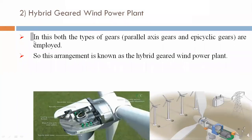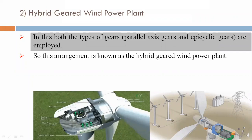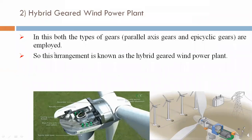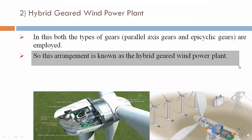Now we are discussing the second type: the hybrid geared wind power plant. In this arrangement, both types of gears — parallel axis gears and epicyclic (planetary) gears — are employed together. This combined arrangement is known as the hybrid gear wind power plant.